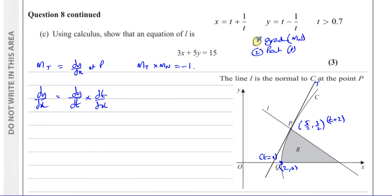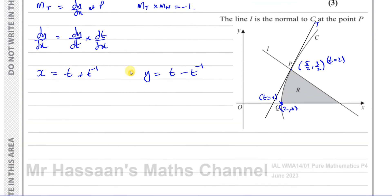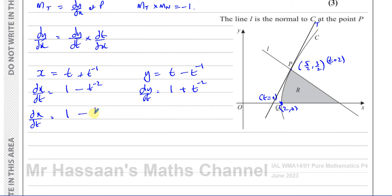We know dy/dx equals dy/dt times dt/dx, using the chain rule for parametric equations. We have x equals t plus t to the power of minus 1, and y equals t minus t to the power of minus 1. So dx/dt equals 1 minus t to the power of minus 2, and dy/dt equals 1 plus t to the power of minus 2. Therefore dx/dt is 1 minus 1 over t squared, and dy/dt is 1 plus 1 over t squared.